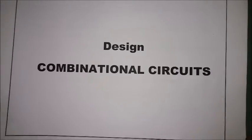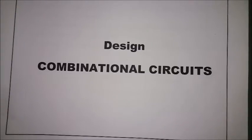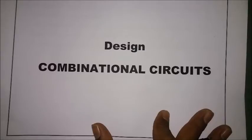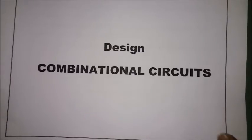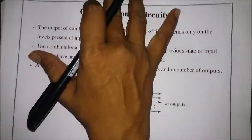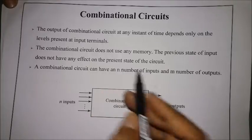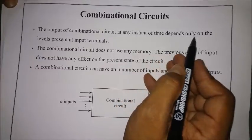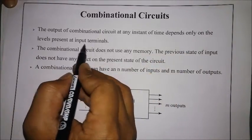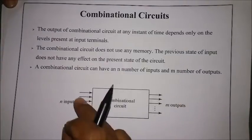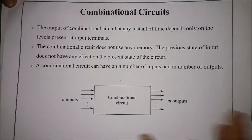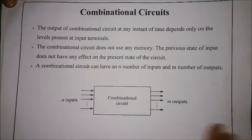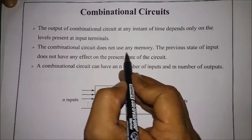Today we are going to discuss the design of combinational circuits. First, we will see what exactly a combinational circuit is. A combinational circuit is one where the output at any instant of time depends only on the levels present at the input terminals. The output always depends upon the present inputs and never on previous values. A combinational circuit does not use any memory cell.